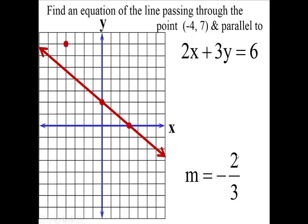Now, if it's parallel, it's going to have the same slope. Look at this right here. You see the 2 right here? It matches the 2 right here. You see the 3 right here? It matches the 3 right here. So the slope of this line is a negative 2/3.